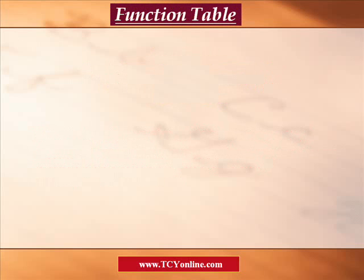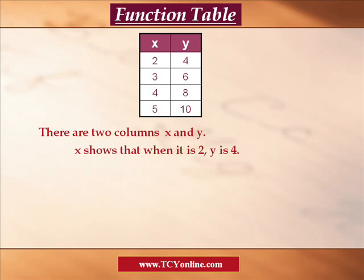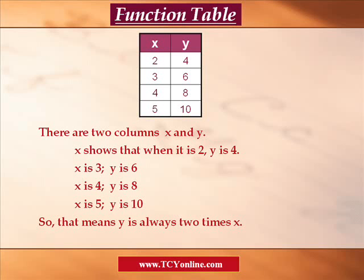Now let's define what functional tables are. Functional tables look like this — you can see there are two columns, x and y. If x is 2, y is 4. When x is 3, y is 6. When x is 4, y is 8, and when x is 5, y is 10. You can see that each time the value of x is getting doubled. So the rule which defines this functional table is y equals 2 times x, that is, y equals 2x.